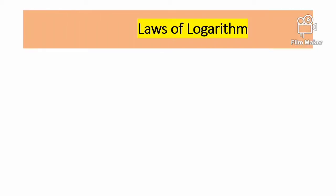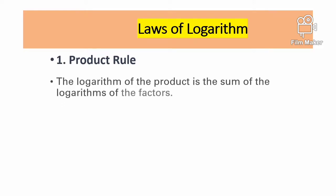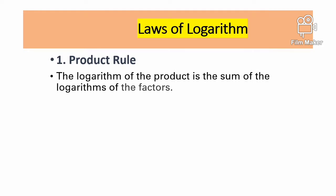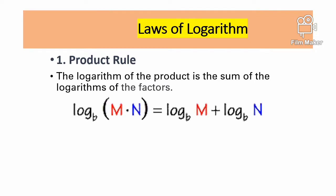Laws of Logarithm. Number 1: The Product Rule. The logarithm of the product is the sum of the logarithm of the factors. Logarithm base b of m times n equals logarithm base b of m plus logarithm base b of n.